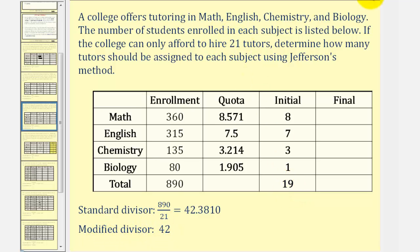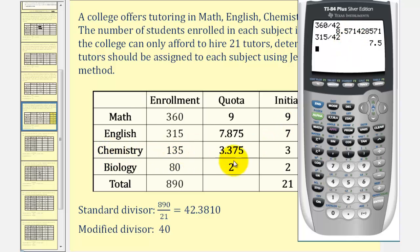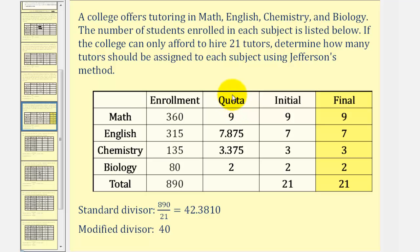Let's try a divisor of 40 and see what happens. With a modified divisor of 40, everything works out perfectly. The quota for chemistry is 135 divided by 40, which is exactly 3.375. For biology, 80 divided by 40 equals 2. Using these quotas and ignoring the decimals, we have an allocation of 9, 7, 3, and 2, which gives a sum of 21 tutors. Therefore, this is the final allocation using Jefferson's method, with a final modified divisor of 40.